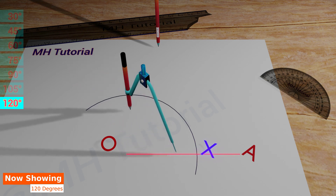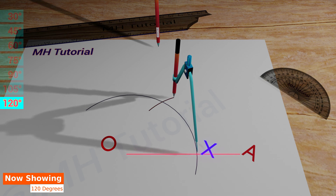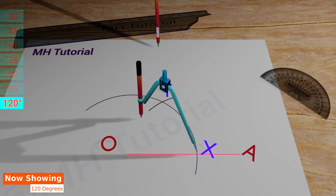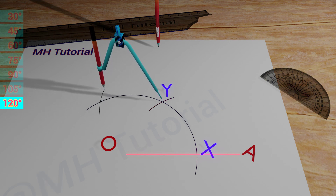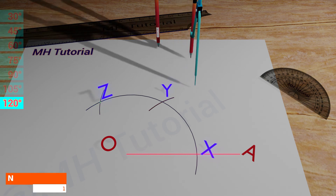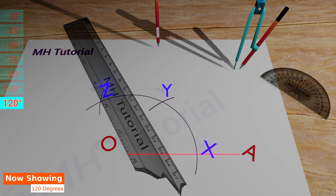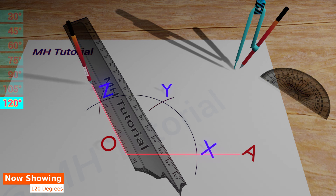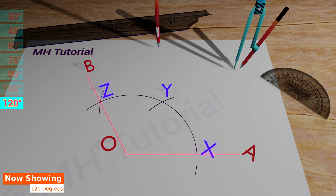Then, another circle arc of the same radius is drawn with the tip of the compass placed at point X. It intersects the previous arc at point Y. After that, put the tip of the compass at point Y and draw another circle arc of the same radius to get an intersection against the first circle arc. This point of intersection is named Z. Now, align the ruler about the point O and the point Z, and draw a line segment between them. This line segment is named OB. Thus, the angle AOB is a 120 degree angle.